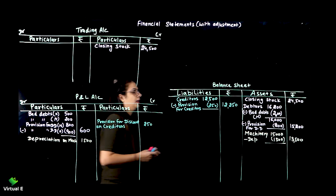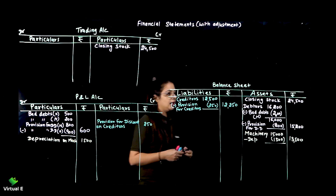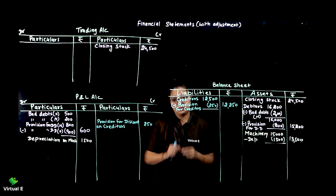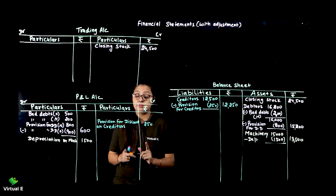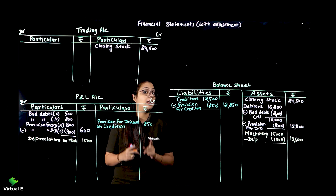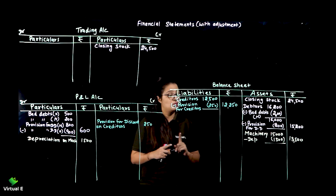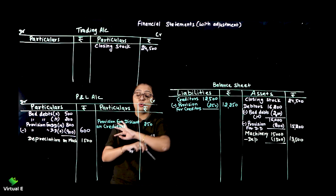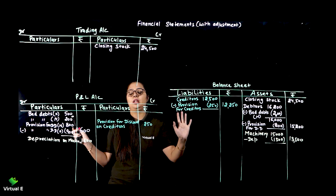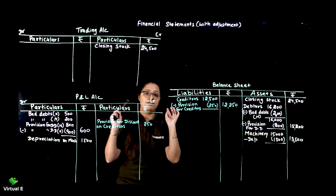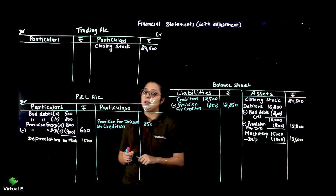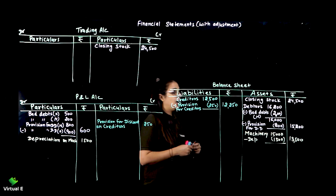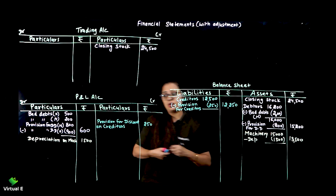Managers commission - remember to do it last. We never do managers commission first. After everything is transferred and the rough net profit comes out, then we will do managers commission. Now prepaid insurance - for that, taxes and insurance is given, so first we write that.